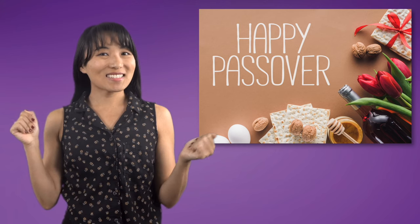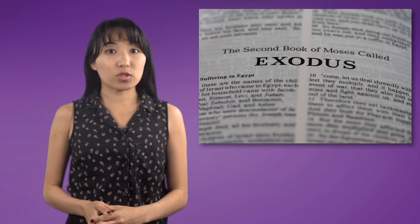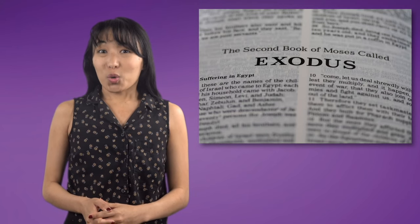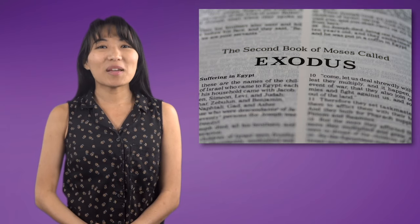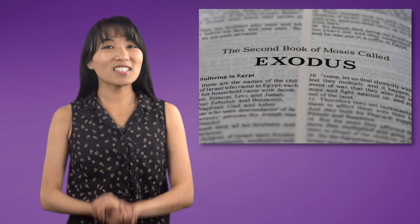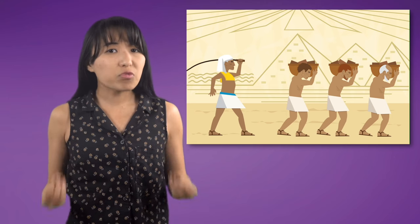Welcome back. Today, we're going to talk about the Jewish holiday called Passover. To understand the traditions and symbols of Passover, we need to go back thousands of years. The holiday is based on a story from the Torah called Exodus. It takes place when cruel leaders called Pharaohs ruled over the land of Egypt and enslaved the Jewish people. The Jews were treated very badly. They prayed and prayed to be set free. Then their prayers were answered and God sent a powerful man named Moses to help set them free.